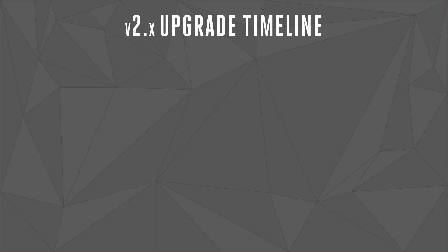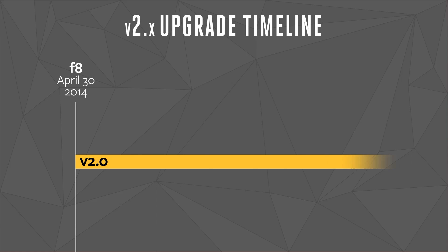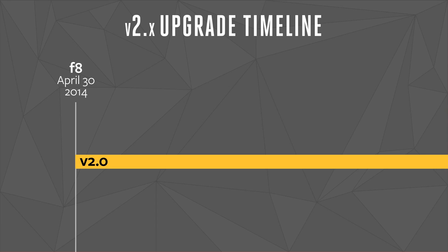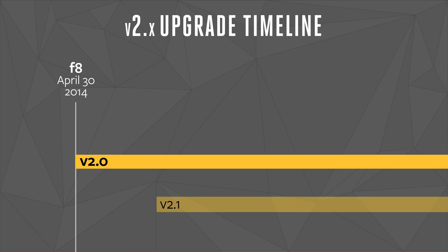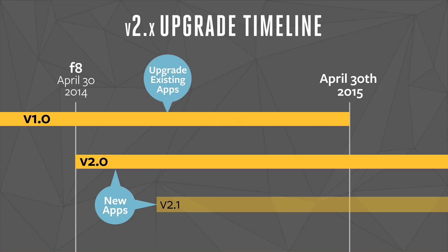We wanted to give developers plenty of time to upgrade to V2 of the API. Here's how the upgrade timeline works. We announced V2.0 of the Graph API at F8 on April 30th, 2014. Since then, we've announced a further update, V2.1. Both versions will be around for at least two years from launch. Apps created since F8 are already using V2.0 or V2.1. Apps which were active before F8 have until April 30th, 2015 to upgrade to version 2 of the API.